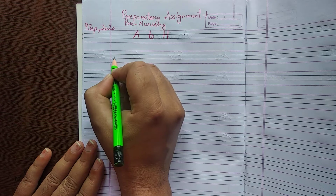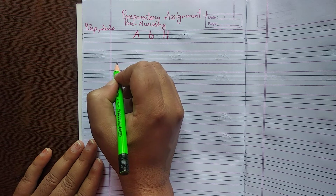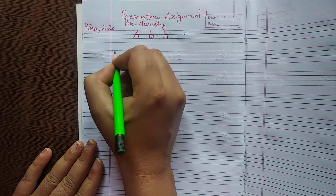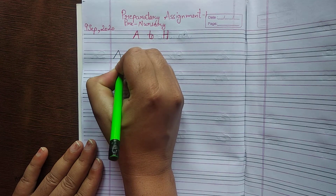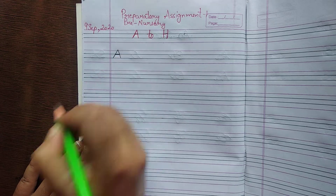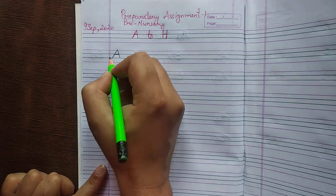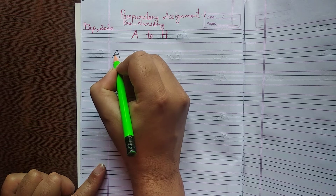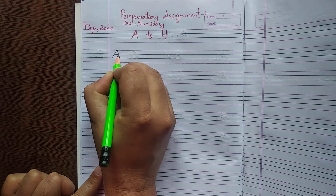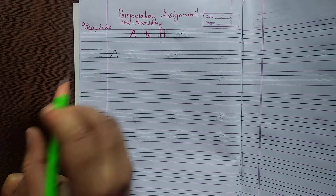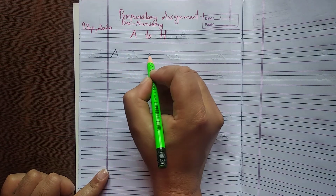First of all, which alphabet do you want to start? A is from A, so you will write A for apple. First slanting line, first slanting line and center slanting line. What is the A? A for apple.